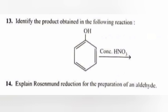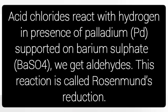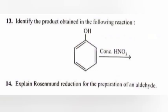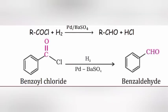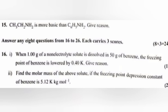Question 14: Explain Rosenmund reduction for the preparation of an aldehyde. Answer: Acid chlorides react with hydrogen in presence of palladium supported on barium sulphate. We get aldehydes. This reaction is called Rosenmund's reduction reaction, or write the chemical equation.